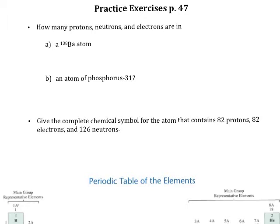In the first problem, they tell us that we have an atom with a symbol of 138Ba, and we need to figure out the protons, neutrons, and electrons. I'm going to start by writing out symbols. Protons is a P with a plus because protons are positive. Neutrons are neutral, so they've got a superscript of 0. And electrons are negative, so they have a negative superscript.